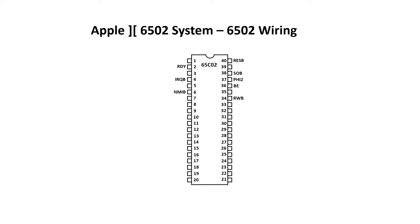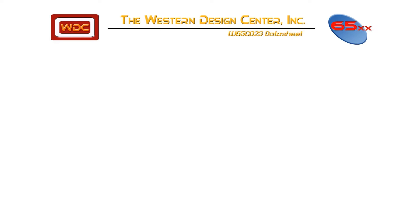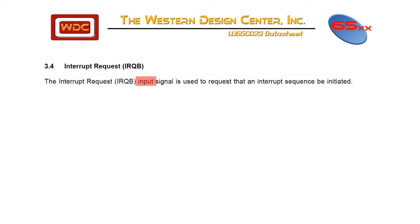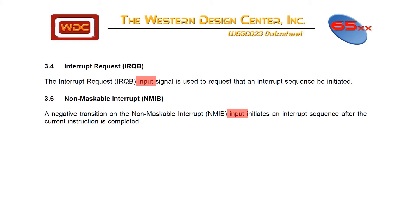We can leave unused outputs disconnected, but we can't do that for unused inputs — we can't just leave them floating. Interrupt request: the interrupt request input signal is used to request that an interrupt sequence be initiated. Non-maskable interrupt: a negative transition on the non-maskable interrupt input initiates an interrupt sequence after the current instruction is completed. We're not using interrupt request or the non-maskable interrupt line at this stage, so we can just tie them to 5 volts through a resistor.